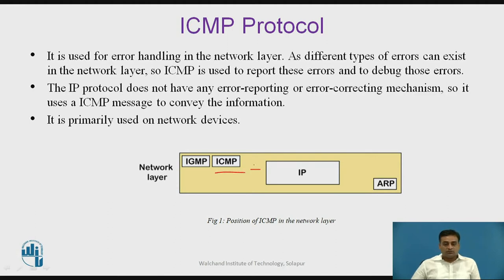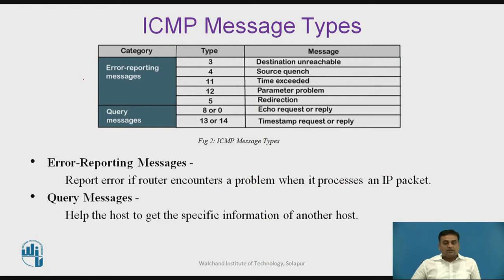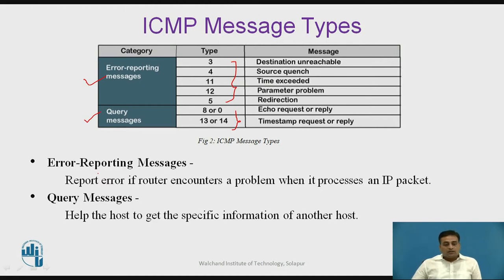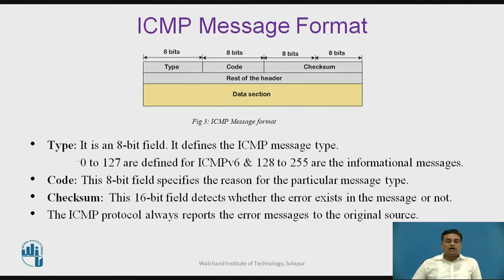The ICMP messages are categorized into two categories. The first category is error reporting messages, and the other is query messages. Under error reporting, there are five different types of messages, and under query messages there are two types. Error reporting messages report errors when a router or destination host encounters a problem processing an IP datagram. Query messages help a host get specific information about another host.